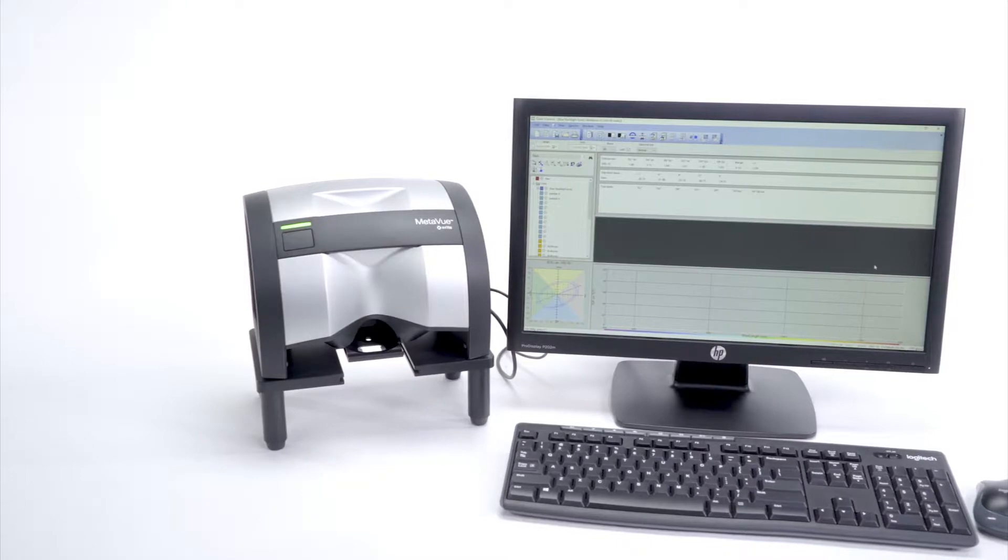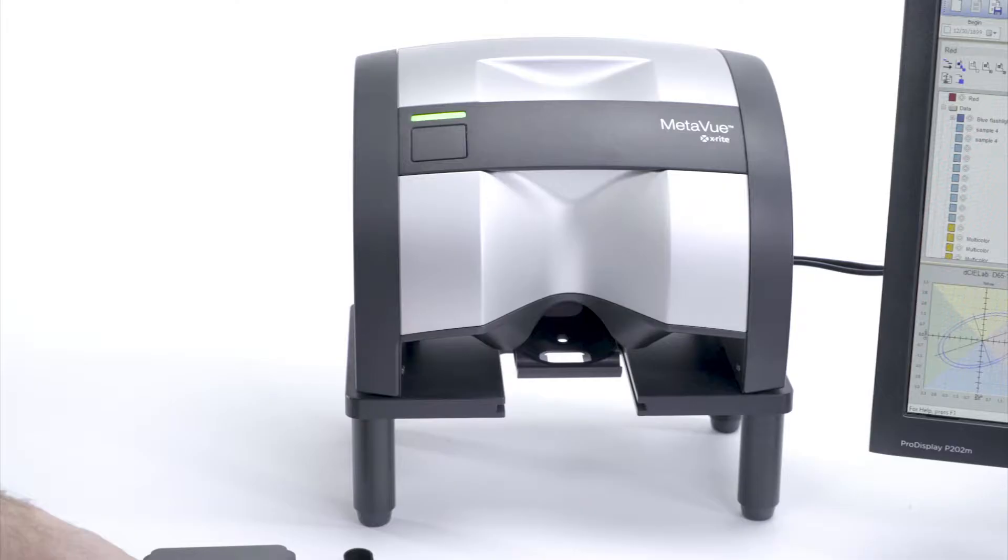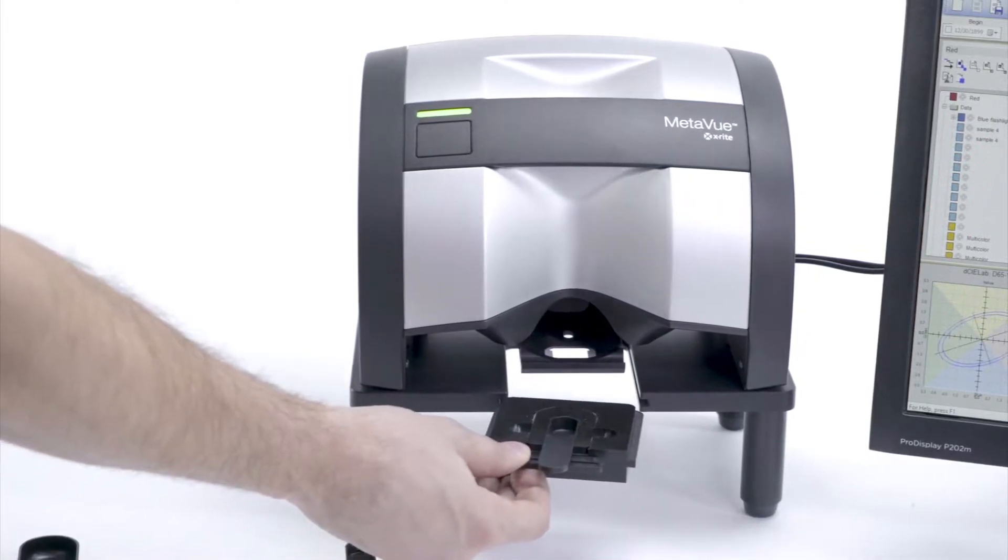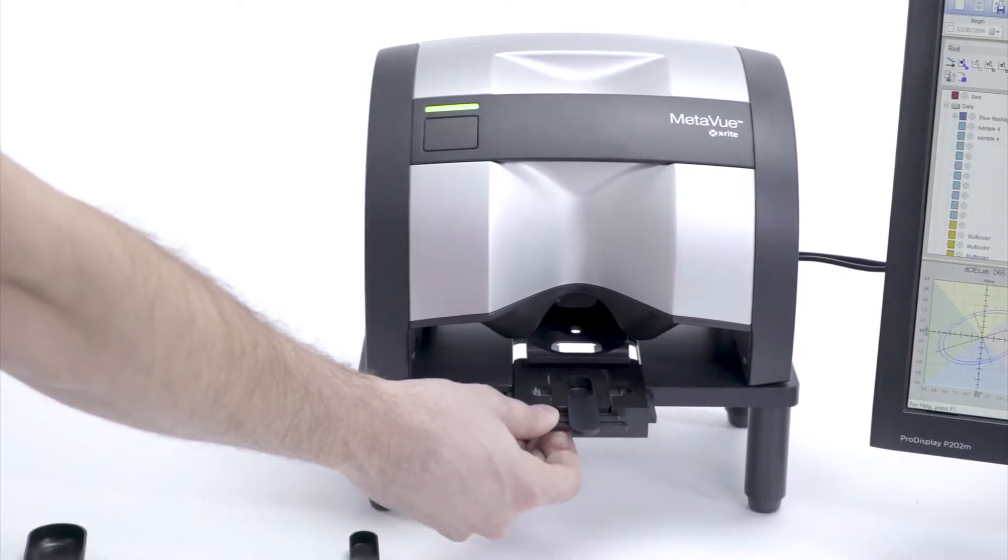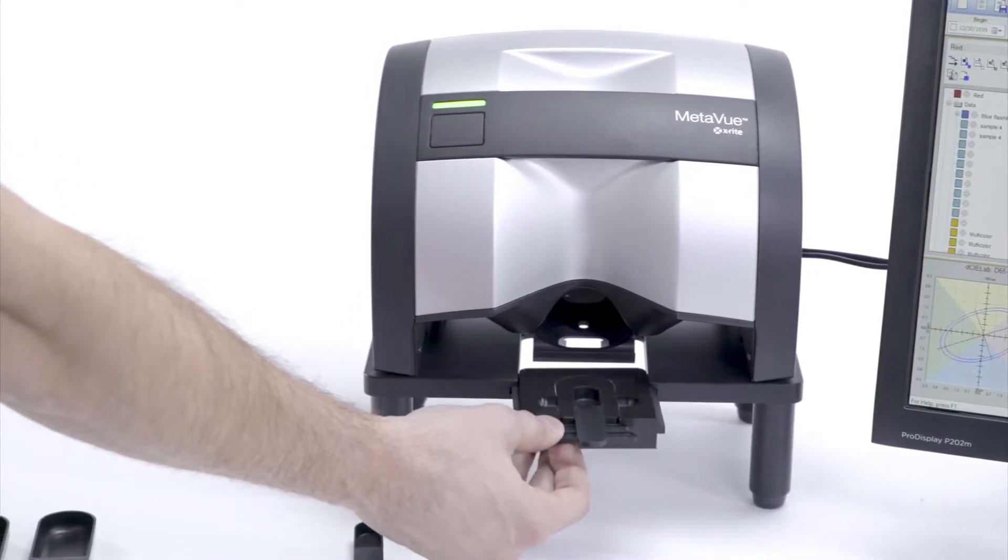The instrument stand places the instrument three inches above the countertop, with replaceable sample holders that slide in and out, allowing for easy measurement of pastes, powders, gels, and liquids.